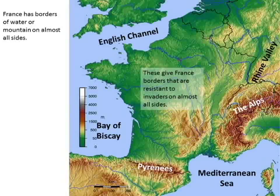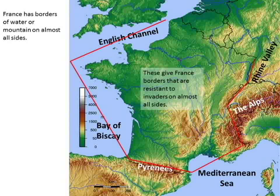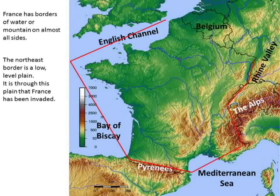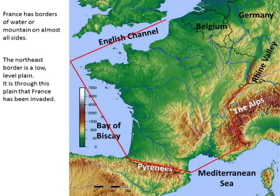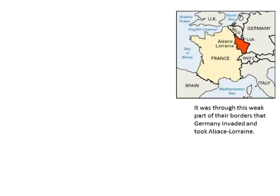That little section there - the northeast. The northeast section is, of course, France's vulnerable point. The northeast border is a low-level plain, and it's through this plain that France has been invaded by Germany. Through this weak part of their borders, Germany invaded.